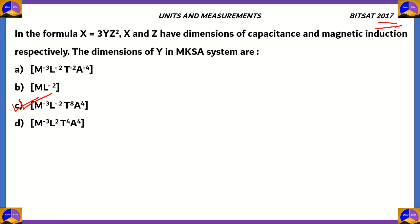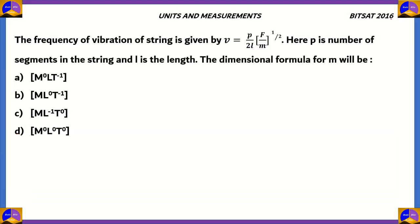Looking at our options, it is clear that the correct option is option C. When you write the equation in terms of y and find its dimensions, the final result equals option C. So option C is the correct answer for this question asked in 2017. Let's look at the final question of this episode — this one was asked in 2016.